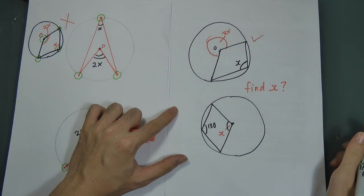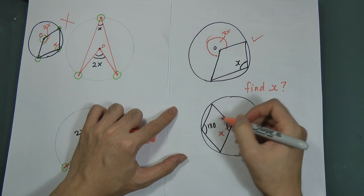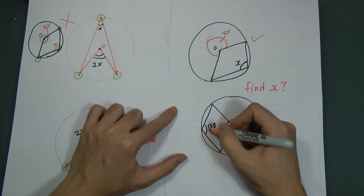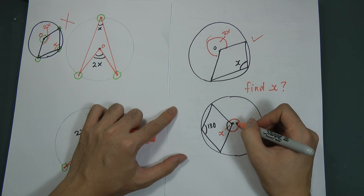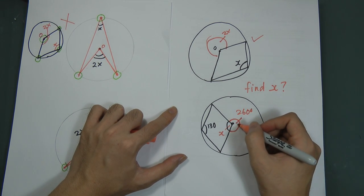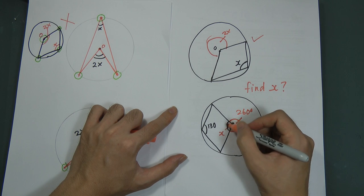So how to find x? So if this is 130, you have to know this angle is double of this one. If this is 130, this one will be 260.